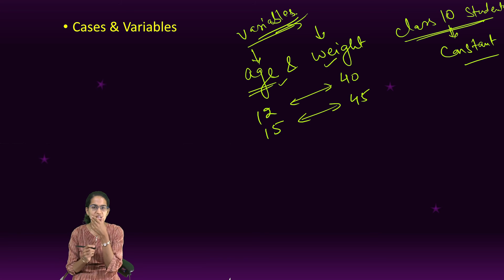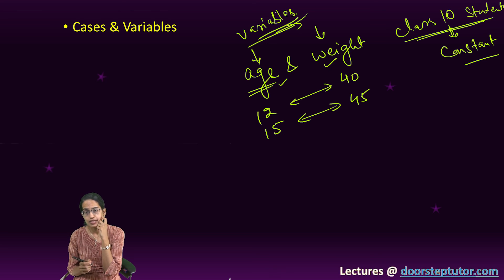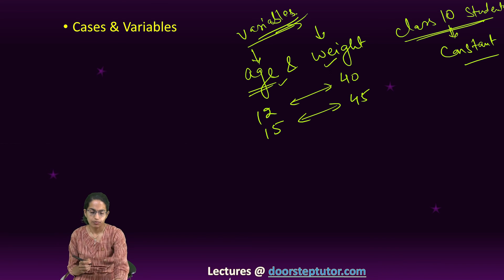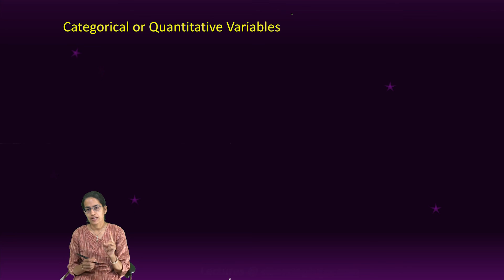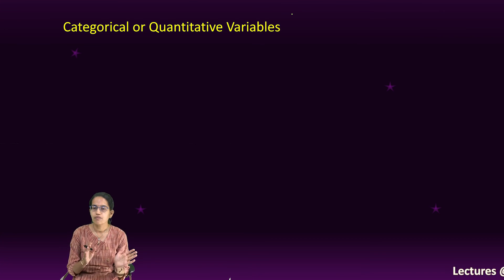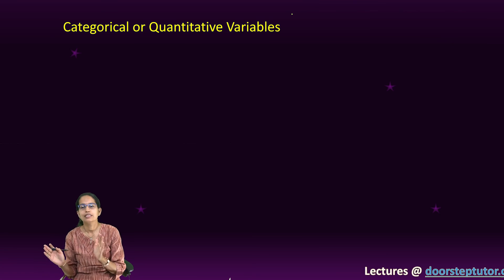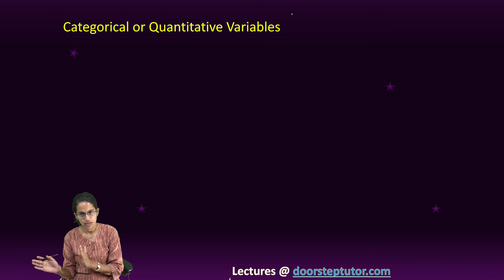So in an experiment we understand that there are certain things which remain constant, but there are other parameters which vary. Now these variables can further be classified based on two different criteria: first is categorical versus quantitative variable, the second is explanatory versus response variable.